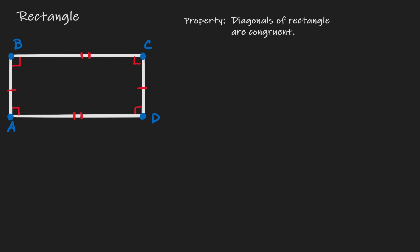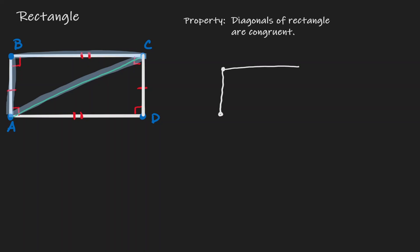Let's draw our diagonal AC. Notice that by introducing this diagonal we have created a right triangle. Let's draw this triangle on the side. We know that angle B is 90 degrees, and notice that BC has a double mark from the rectangle and BA has one mark from the rectangle.